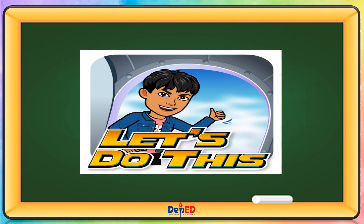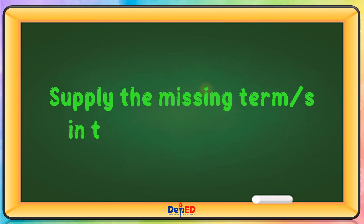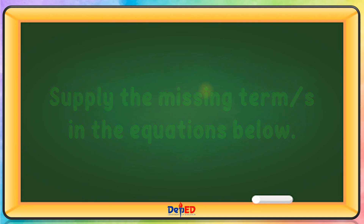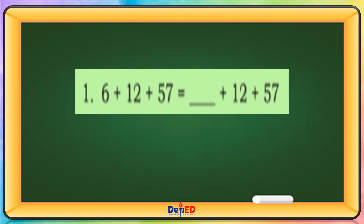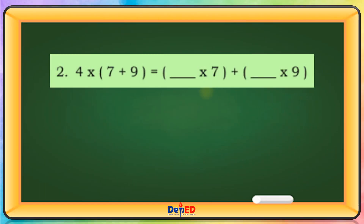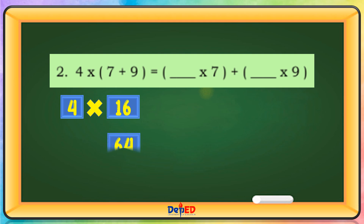Let's do this. Supply the missing terms in the equations below. 6 plus 12 plus 57 — the missing term is 75. 75, and the missing term is 6. 6 plus 12 plus 57 equals 75. 4 times 7 plus 9 equals 16. 4 times 16 equals 64. Our missing terms are 4 and 4.